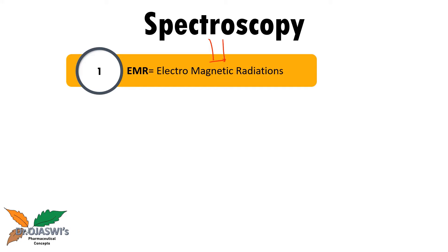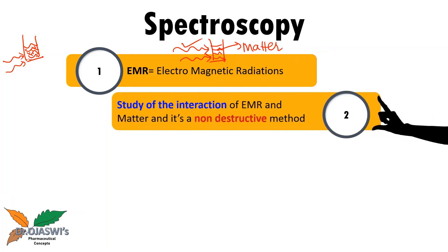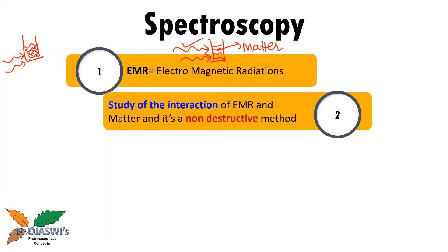We know that electromagnetic radiations possess energy, and when they pass through any sample — suppose I have a solution of some chemical compound — when these radiations are passed through this solution, there is interaction between the matter (my sample, the chemical compound present in it) and the radiation. For example, if I make a paracetamol solution in a suitable solvent, the paracetamol molecules will interact with these radiations as they pass through the solution. This interaction of matter or sample with the radiation is what we study under spectroscopy.